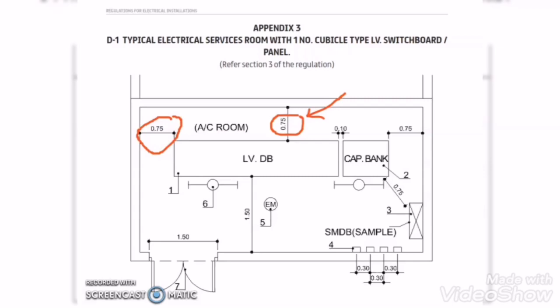The third requirement is that the LV panel front wall must be minimum 1.5 meters away from the front side of the LV room wall. If the distance is more than 1.5 meters it is fine, but minimum we have to maintain 1.5 meters. The LV room door width should also be 1.5 meters.